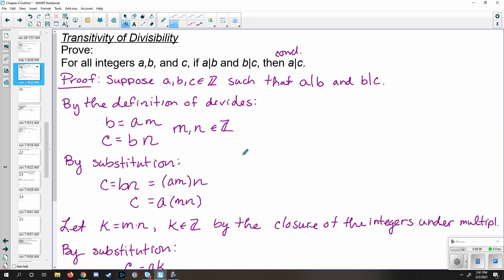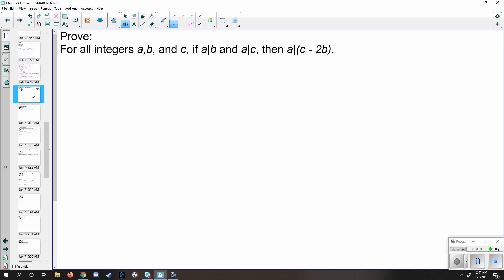Let's go ahead and take a look at one more example that uses the definition of divisibility in a proof setting. So similar to what we've just seen here, but we're going to do a slight variation. This time, for all integers a, b, and c, if a divides b, and a divides c, then a divides the quantity c minus 2b. So let's see how manipulations of b and c would work in this case. And this itself is true.